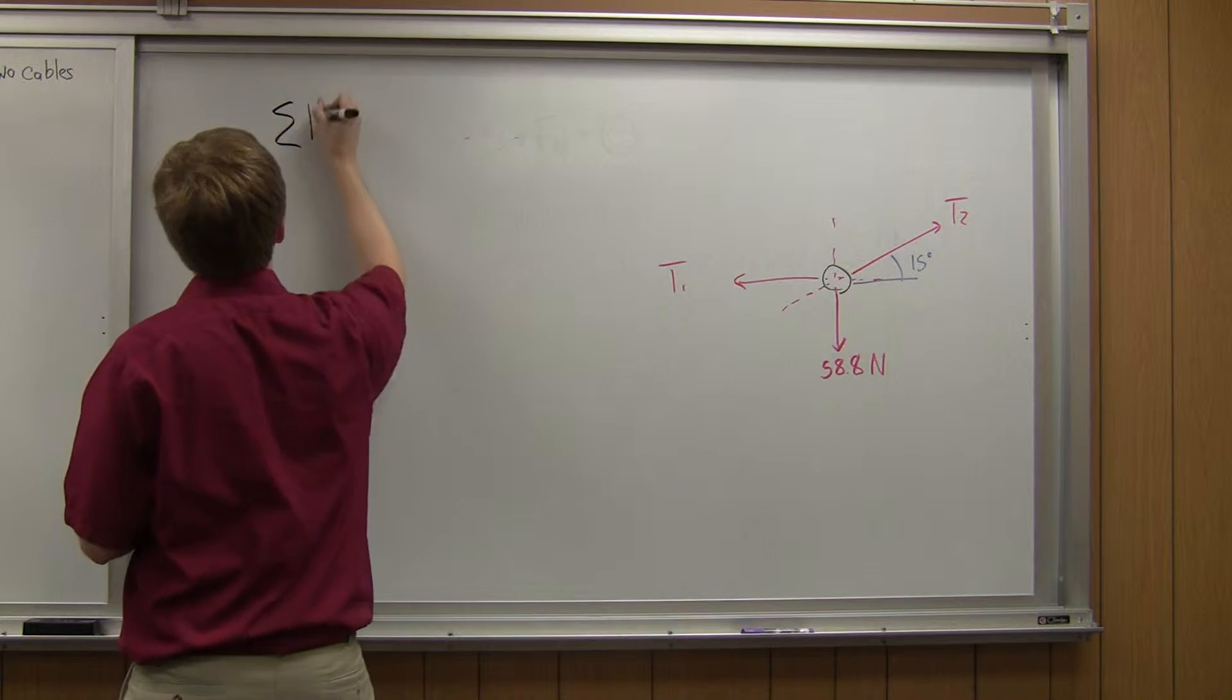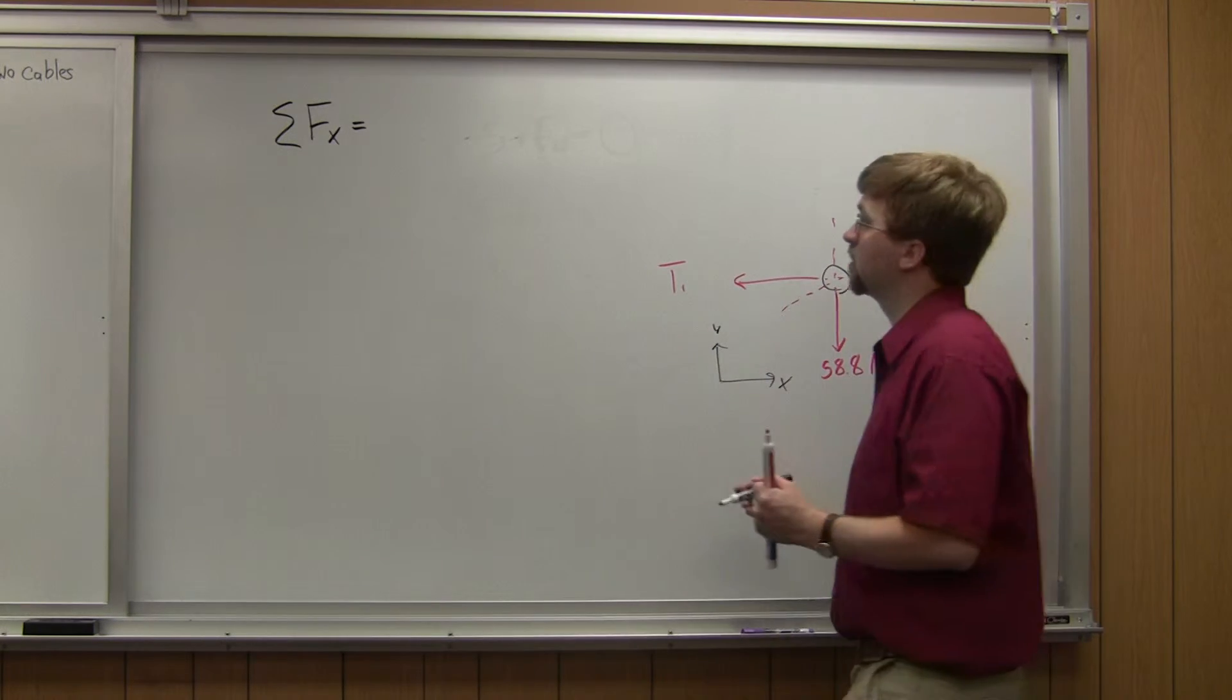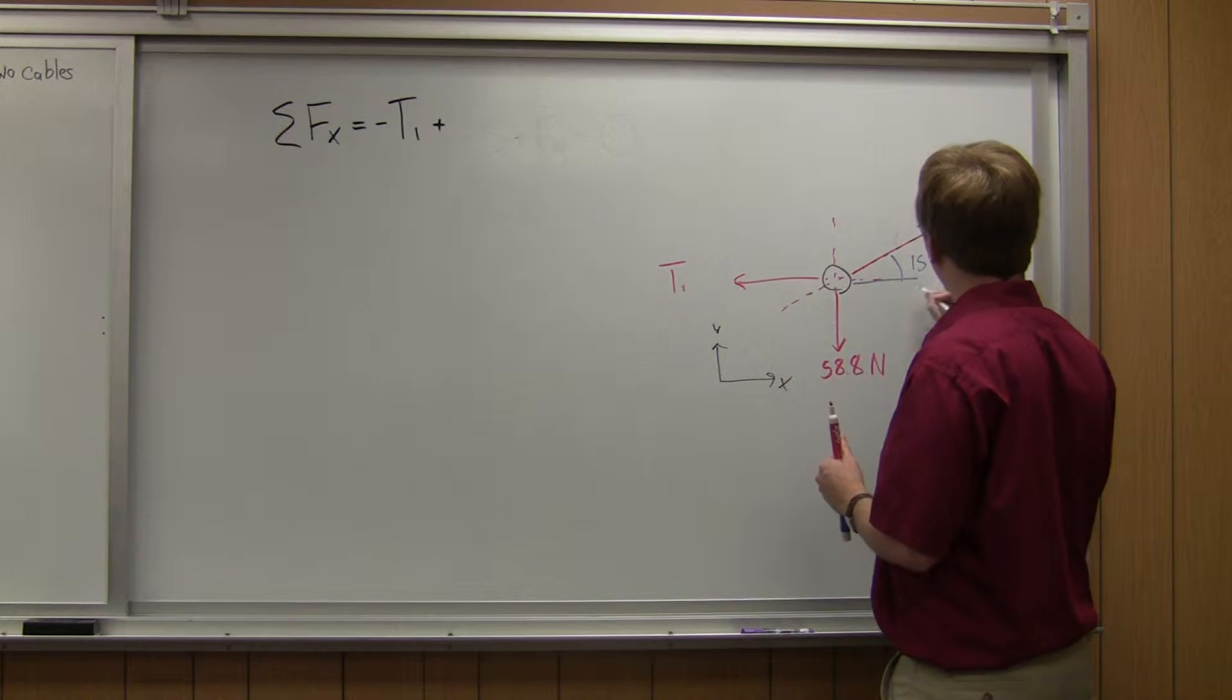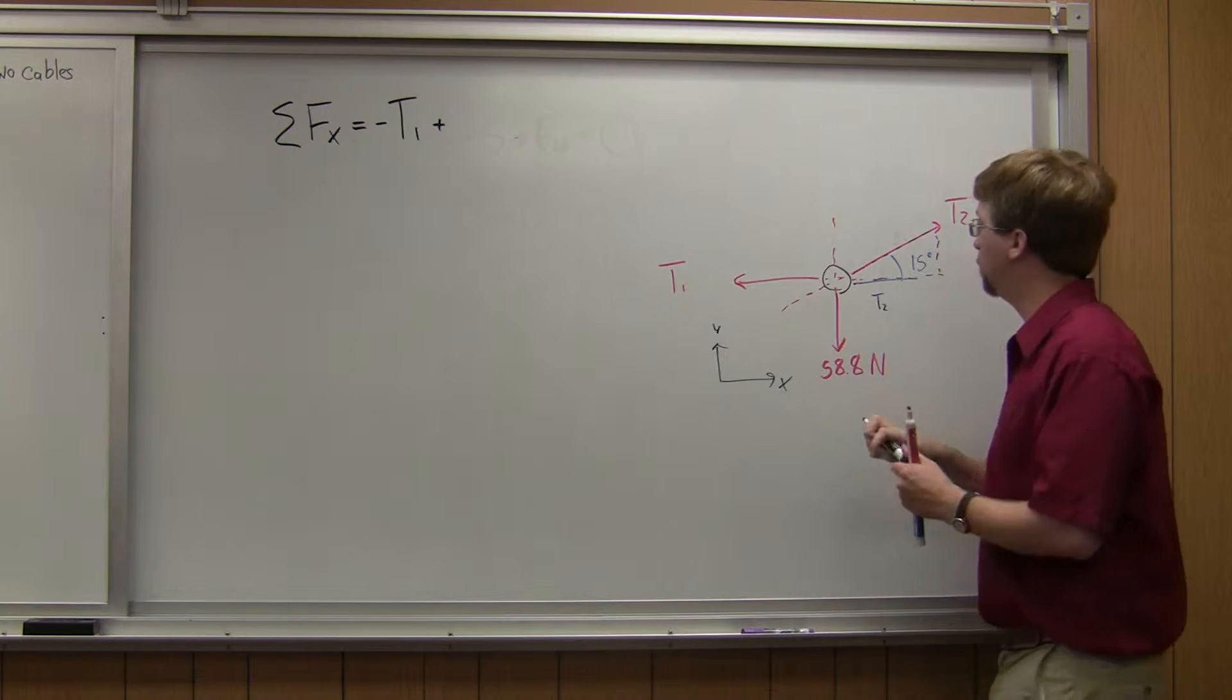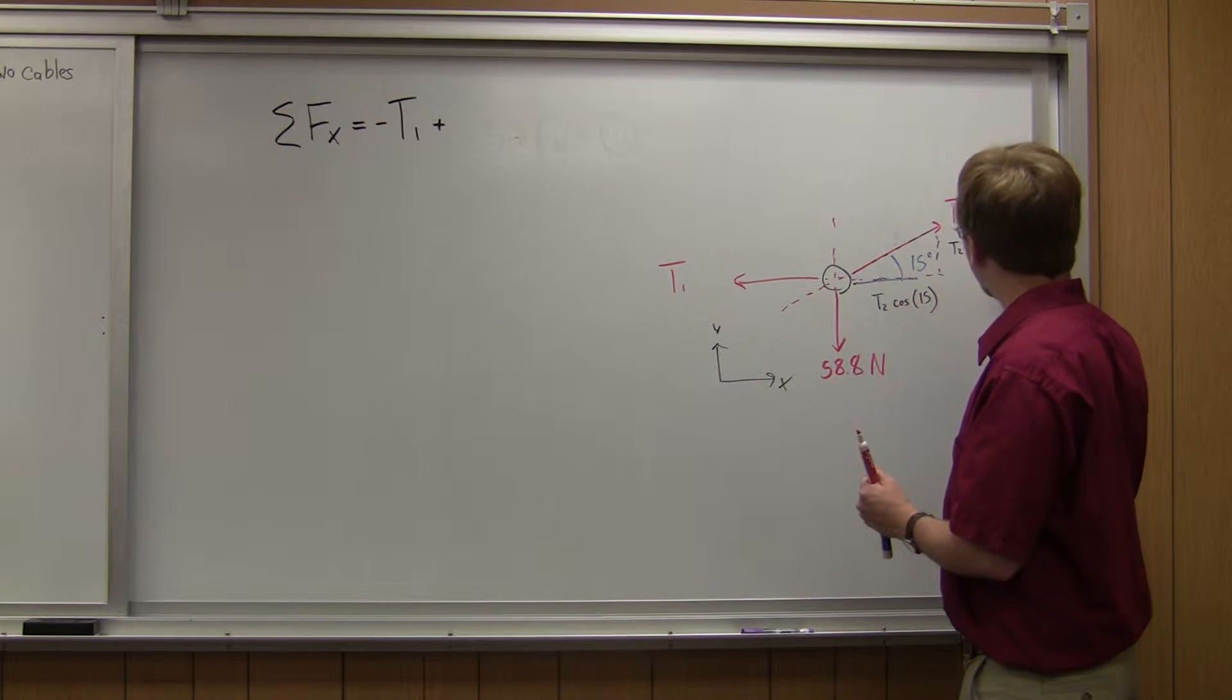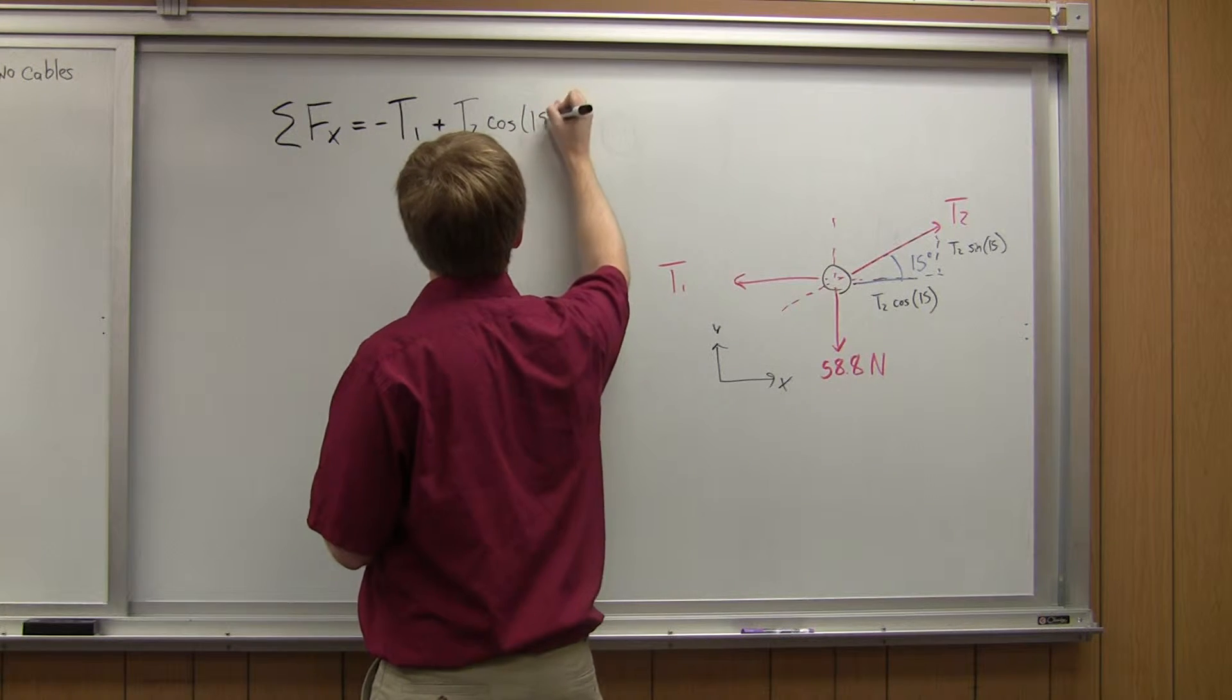So let's start with forces in the x. I know that the sum of the forces in the x is going to be equal to negative T1 - this is going in the negative x direction. So negative T1 plus, it's going to be a component of this vector over here. So if I imagine drawing out a triangle, the horizontal component here is going to be T2 times the cosine, because it's the adjacent side here to this angle. So cosine 15. The vertical part is going to be T2 sine of 15, because this is the opposite of the angle. So plus T2 times the cosine of 15 degrees.